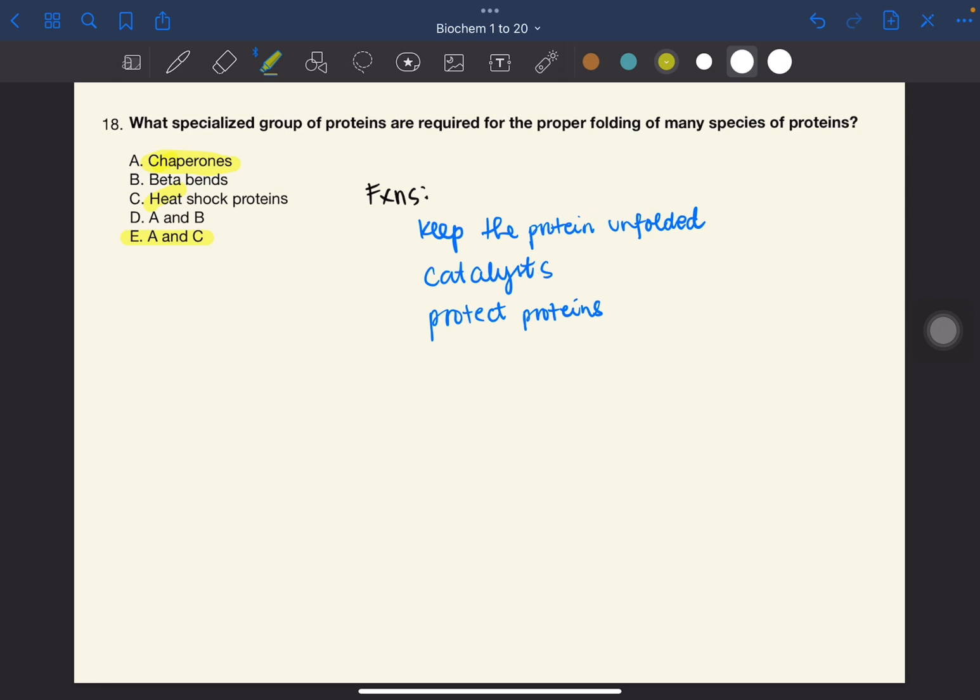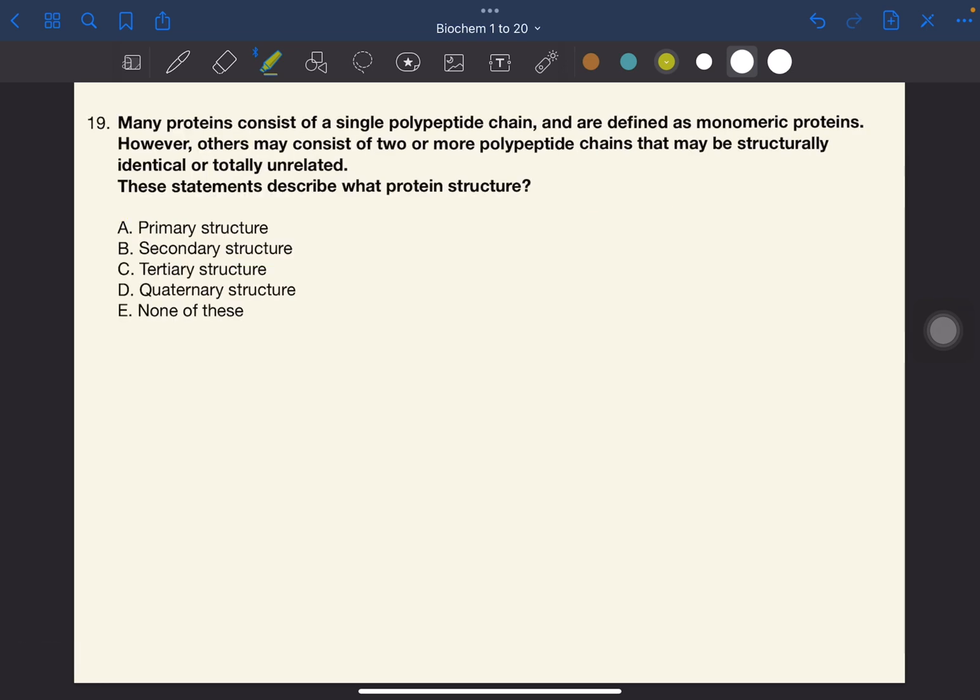They also protect the proteins so that exposed regions don't participate in unnecessary interactions and ensure proper folding. Number 19. Many proteins consist of a single polypeptide chain and are defined as monomeric proteins. However, others may consist of two or more polypeptide chains that may be structurally identical or totally unrelated. These statements describe what protein structure.